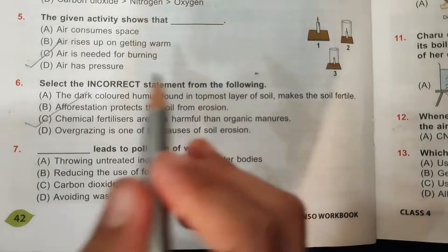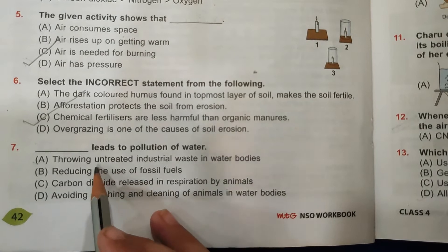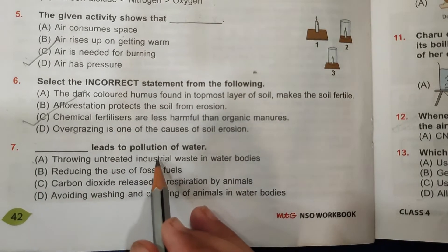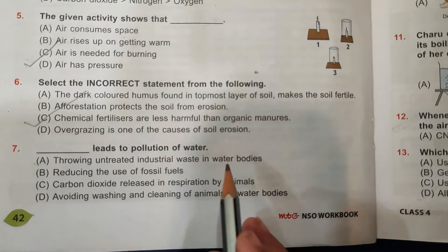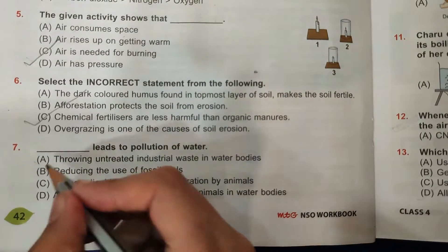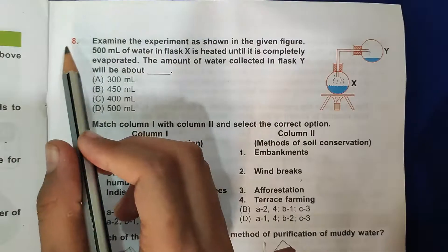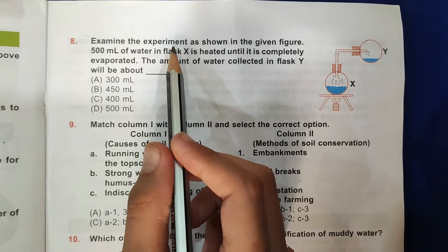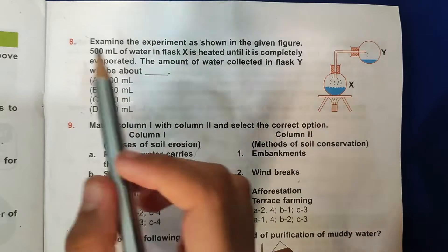Chemical fertilizers are more harmful than organic manures, so C is the correct answer. Then seventh question: That leads to pollution of water. A: Throwing untreated industrial waste in water bodies - yes, that leads to pollution of water, so A is the correct answer.